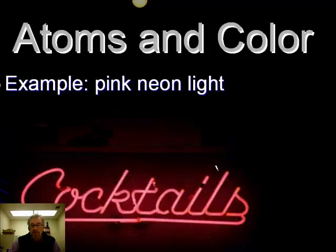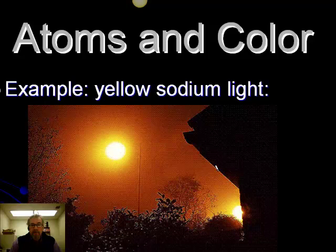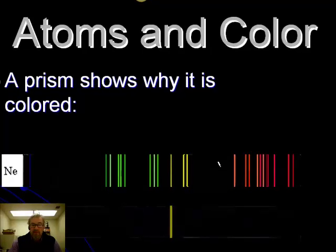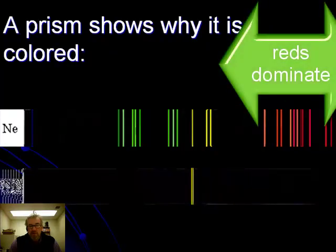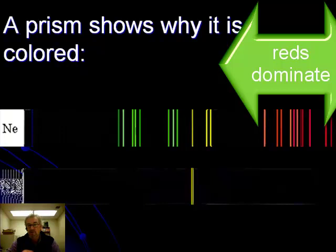For example, if you put neon in a glass tube like this sign and discharge electricity through it, it always looks pink. Another example is sodium vapor lights used throughout cities — they look yellow. When we pass that light through a prism, we see why only those colors appear. Looking at the neon spectrum, pinkish colors dominate. Sodium has only two lines in its spectrum, so all colors are missing except those two, and we only see yellow light.